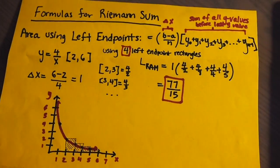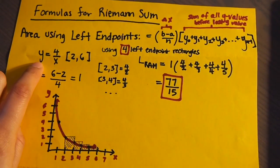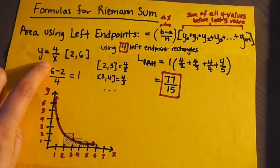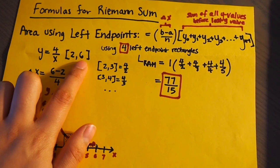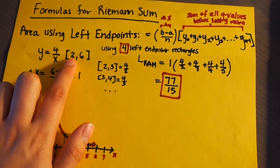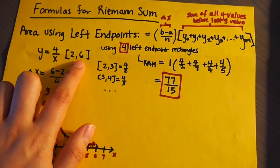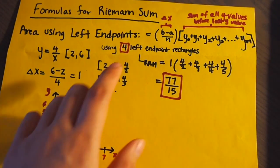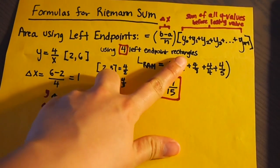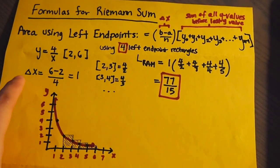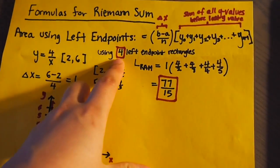So in this example, our equation will be y equals 4 over x, 2 being the lower bound and 6 being the upper bound. So it would be a equals 2 and b equals 6. And we'll be using four left endpoint rectangles, which means that we're going to have four sum units, and that means that n equals 4.